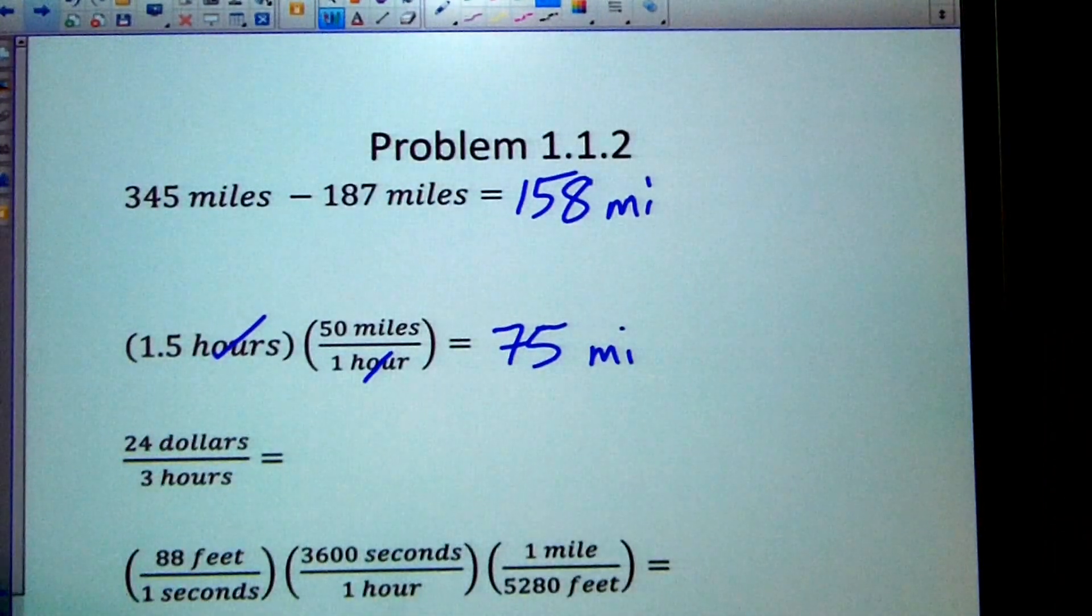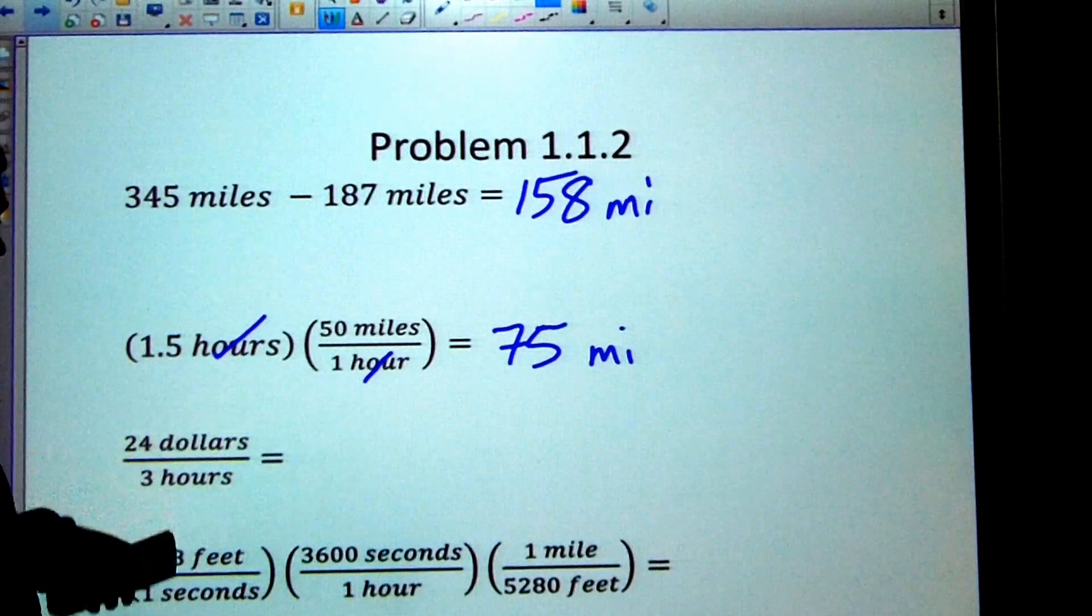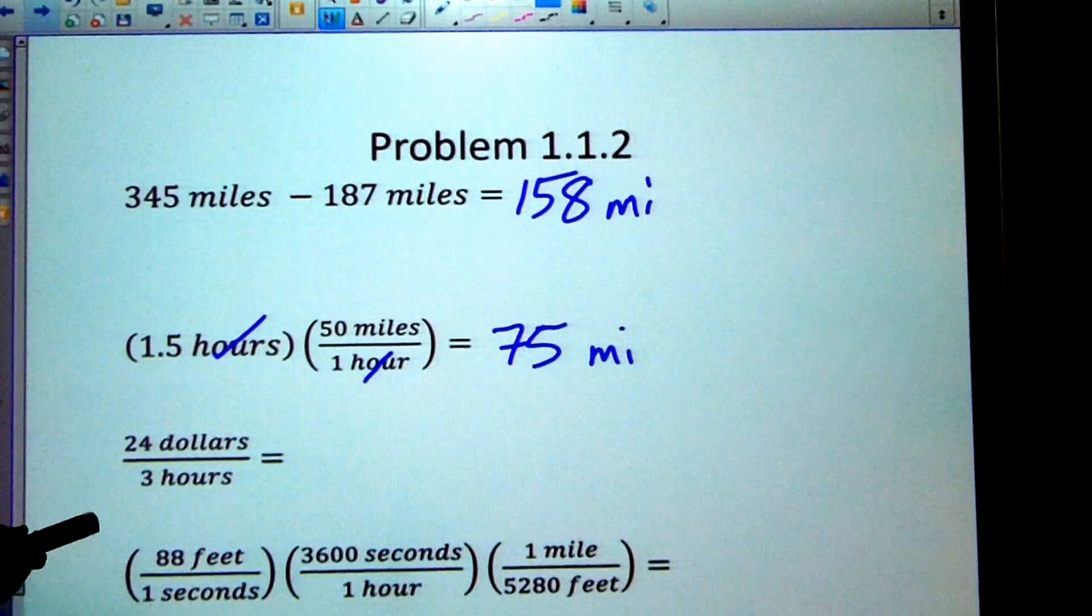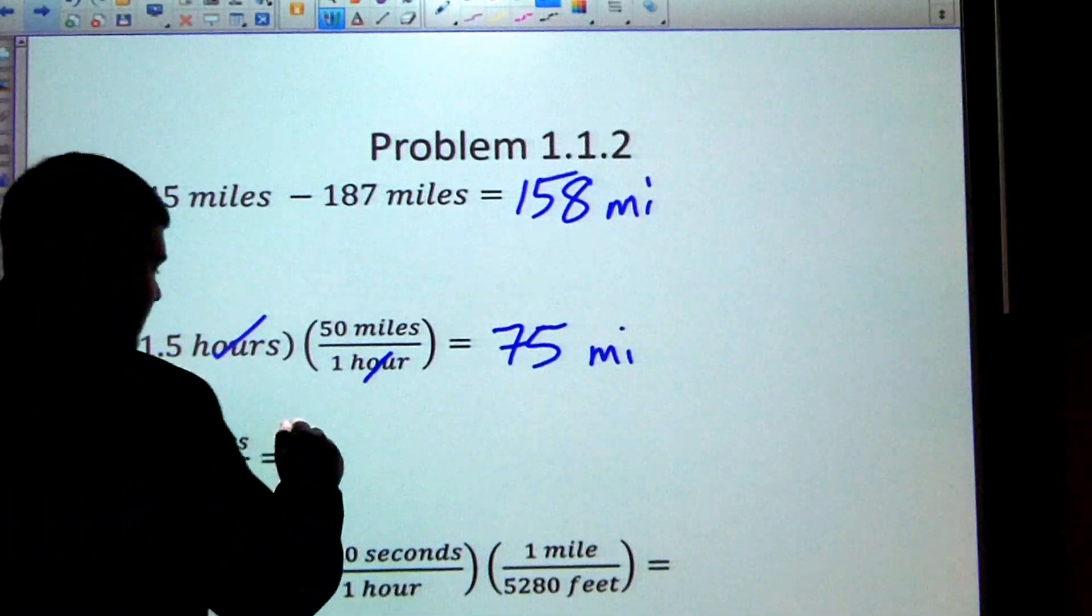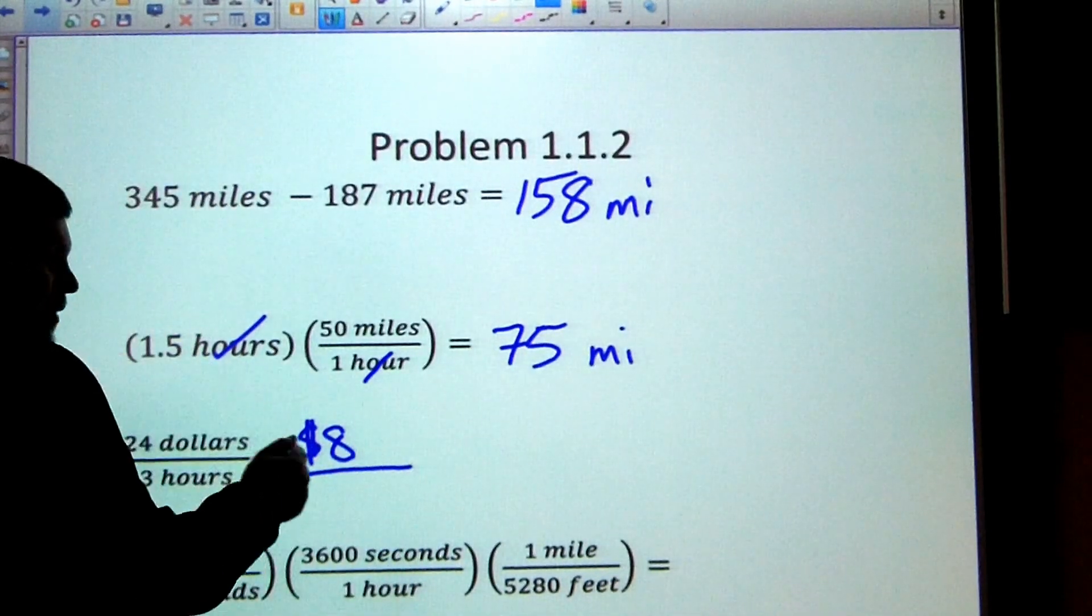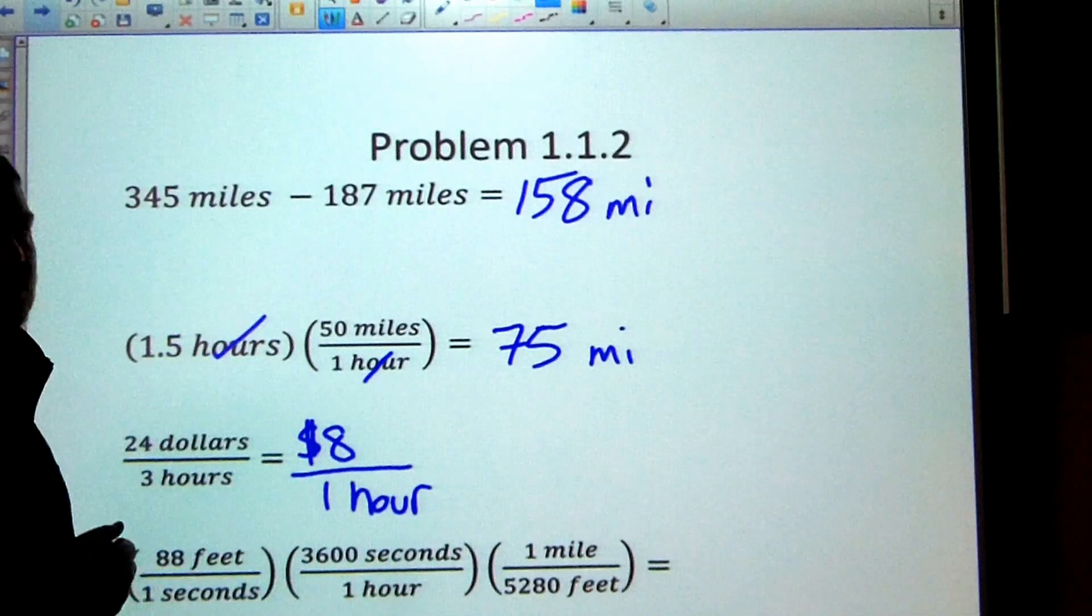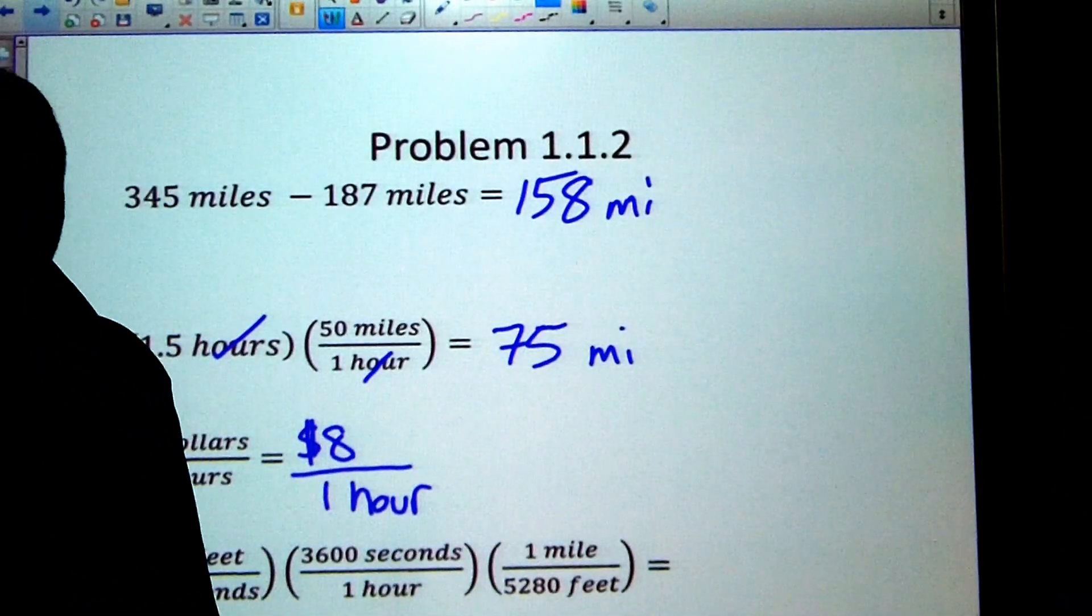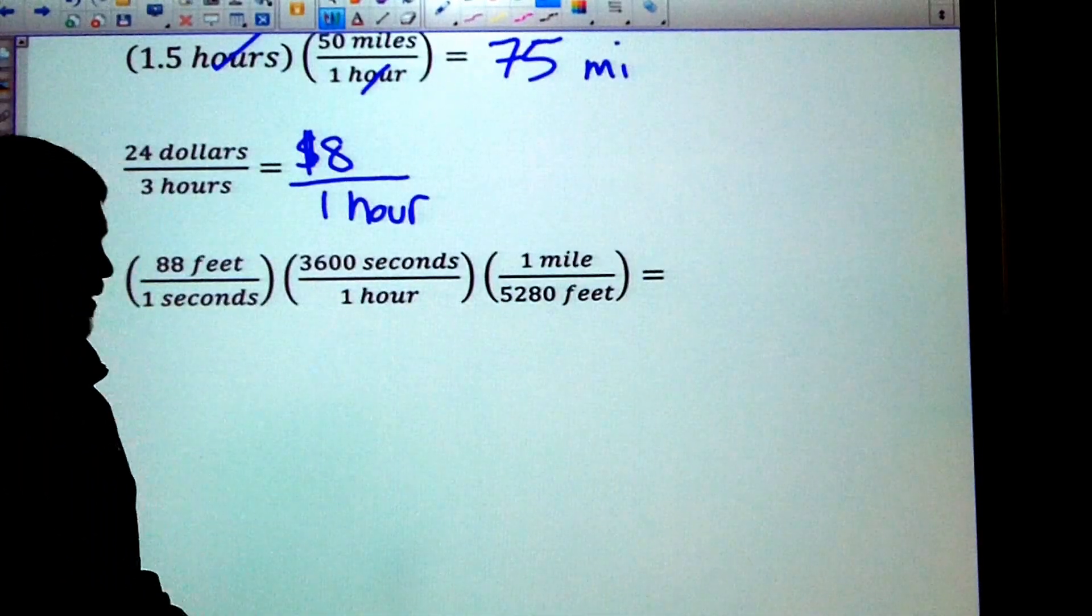$24 divided by three hours. Well, unfortunately, no units cancel out. So all we can do is take care of our numbers. So 24 divided by three is eight. So I have eight up top, and it's $8 divided by one hour. So that's kind of like you're making $8 an hour at your job.